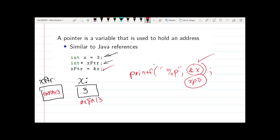And this pointer variable does in fact have its own address, whatever that may be. So we'll make up something hex f003. And so, we can see that the pointer has its address and the variable x has its address.